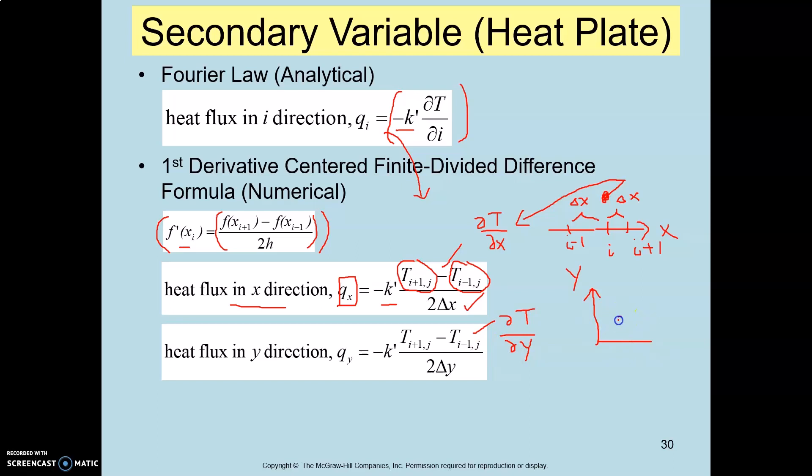For the same point, your Y axis is here, so this is your i point. You want to find what the dT/dy is at this point, so you need the information of the temperature in front of it, which is i plus 1, and backward, i minus 1. You need to be careful.